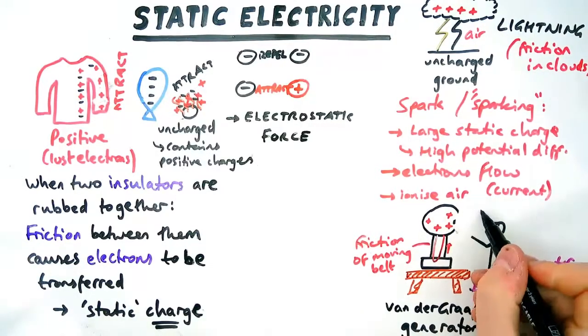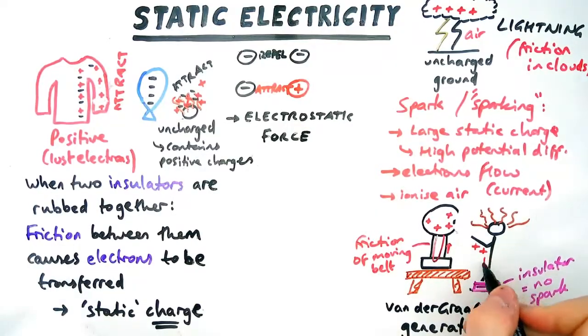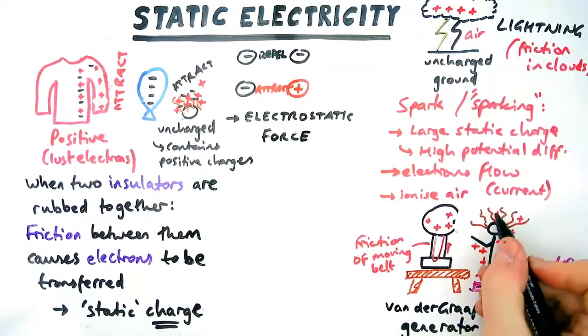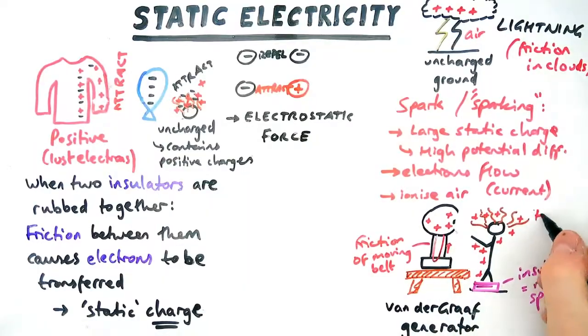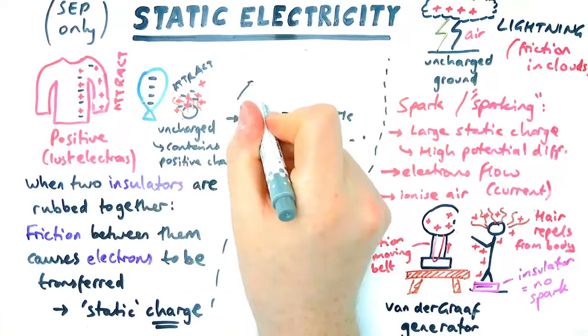Instead, what will happen, you'll still become charged, but the charge won't be able to go anywhere. So you yourself will be charged. You'll have a positive charge in your legs, in your feet, in your hands, in your hair. This is why you might see the effect of hair standing on end, because your hair is the same charge as your head, and so they will repel each other, meaning they move away.